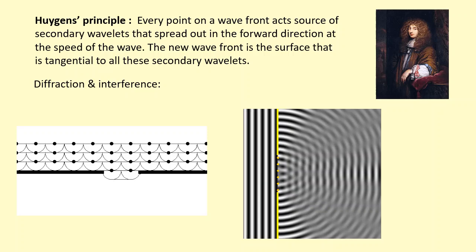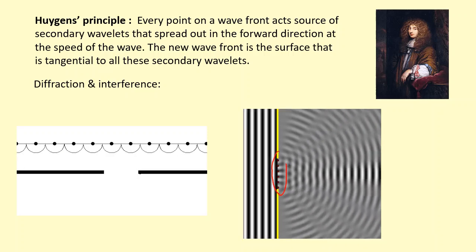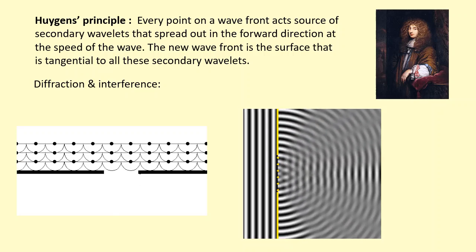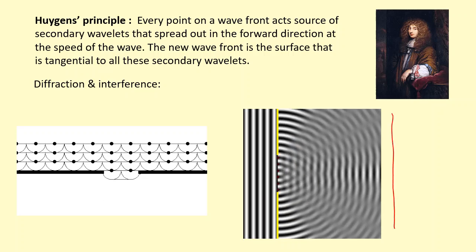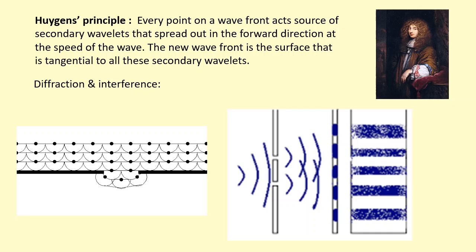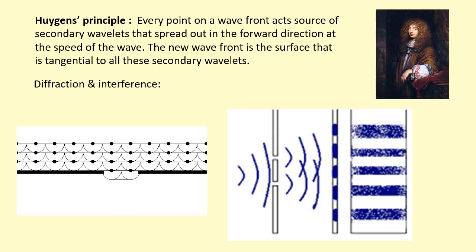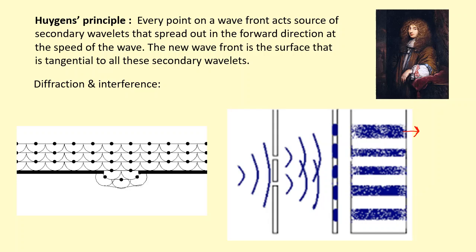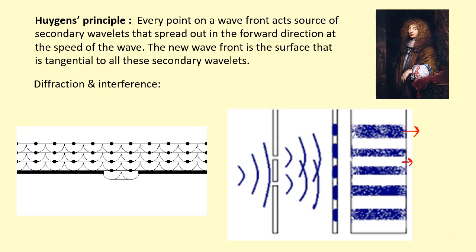He was also able to explain superposition and interference. Every point going through the gap acts as a source of secondary wavelets, producing an interference pattern on any screen placed beyond. This is a single slit, but he also predicted it with a double slit, which was demonstrated by Young much later. Unlike Newton, who predicted only two fringes, Huygens predicted multiple fringes — dark fringes formed when waves meet at an odd multiple of pi out of phase, and bright fringes when they are in phase at an even multiple of pi phase difference.